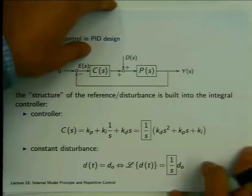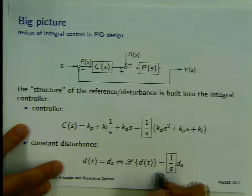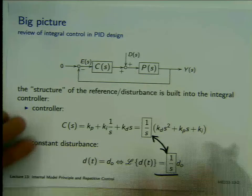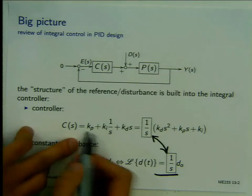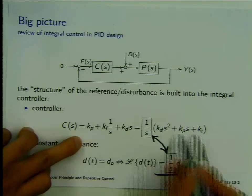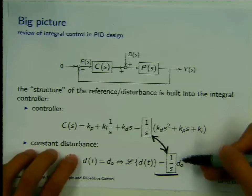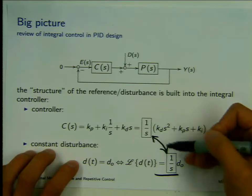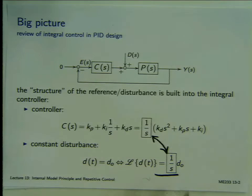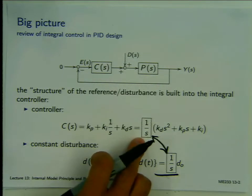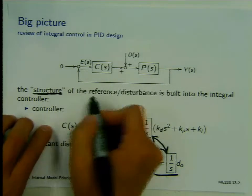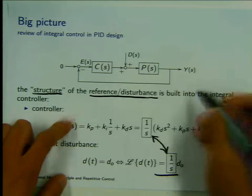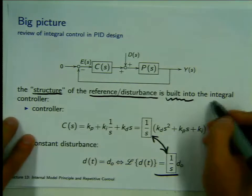Here is another perspective. The disturbance has this structure, and if you look at the controller, you can factor out the integration part and put the remaining terms inside. You see the disturbance structure is appearing as part of the controller. The disturbance has a pole at the origin, and the controller exactly has a pole there. So the takeout message is: the structure of the disturbance is built into this integral controller.